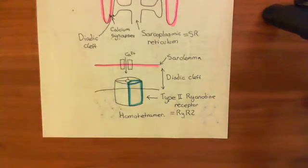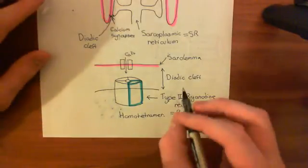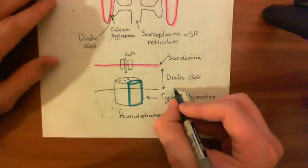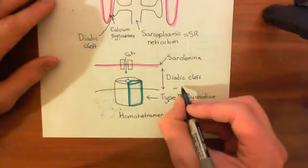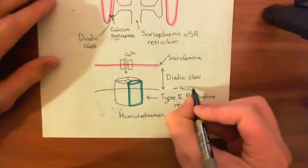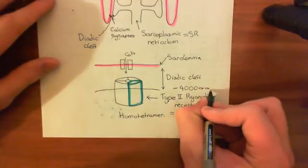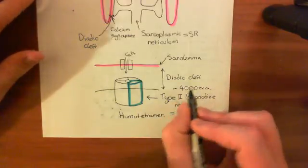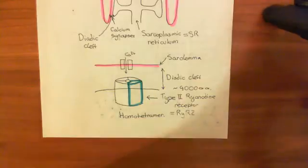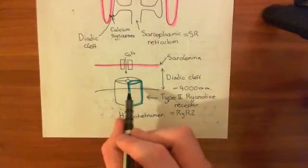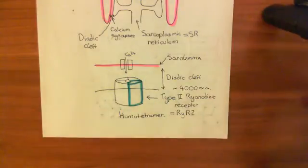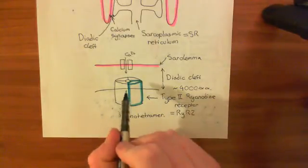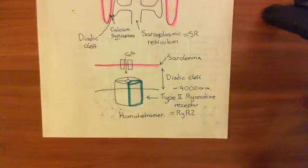Another fun fact: ryanodine proteins are absolutely massive — approximately 4,000 amino acids in length. We are putting four of these together to get the overall ryanodine receptor, so it is a massive great protein. These things are actually visible when you do electron microscopy.